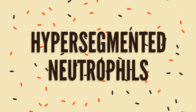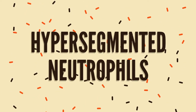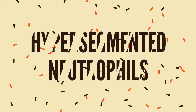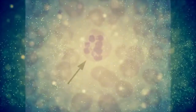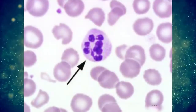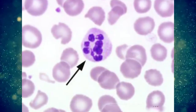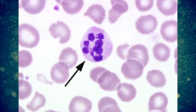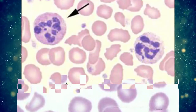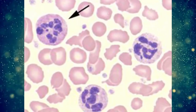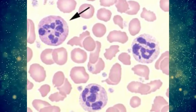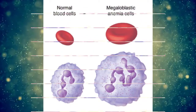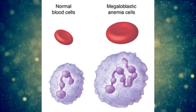Hyper-segmented neutrophils. The presence of hyper-segmented neutrophils is an important diagnostic feature of megaloblastic anemias.